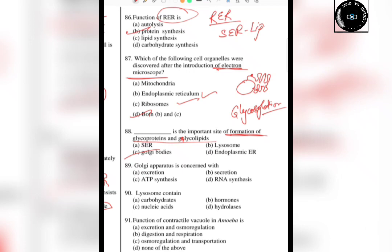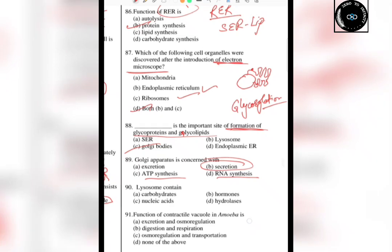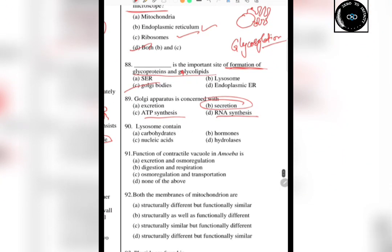The next question is: Golgi apparatus is concerned with what? It is not excretion — that belongs to the excretory system. ATP synthesis is done by mitochondria. RNA synthesis is done by the nucleus. So the answer is secretion. Additionally, Golgi also helps in modification and packaging of proteins coming from the ER.